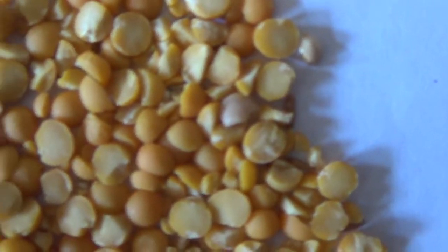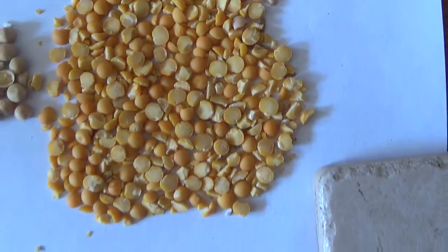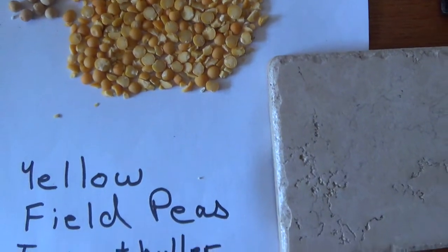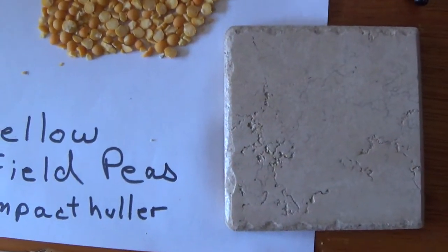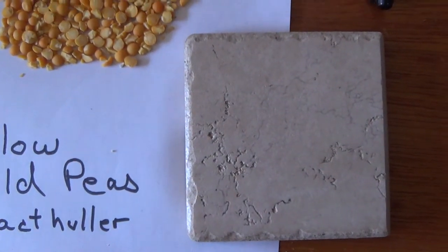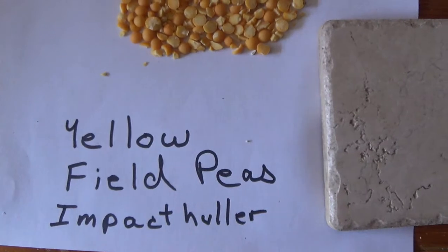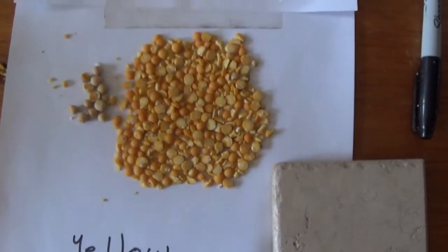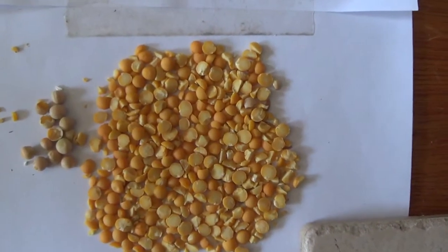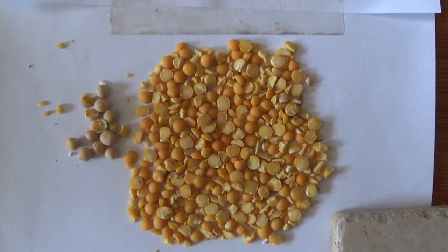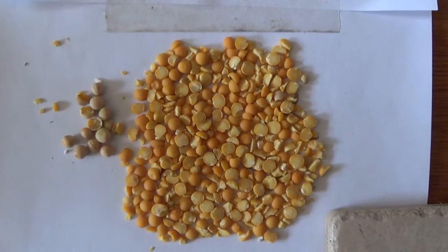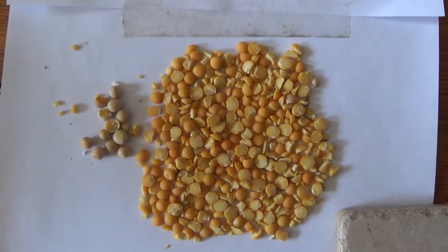this looks pretty successful for a home system. This is the tile here - I just had it hit those as you saw earlier in the video. I think we now have another grain that can be processed by a simple impact huller. Good luck with your processing.